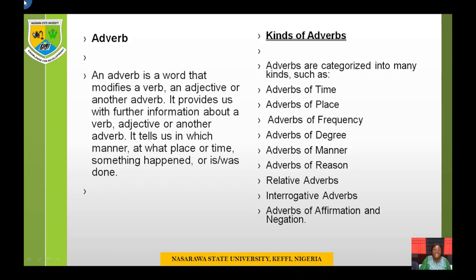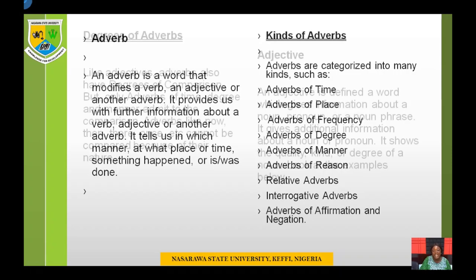An adverb is a word that modifies a verb, an adjective, or another adverb. It provides further information about a verb, an adjective, or another adverb. It tells us in which manner, at what place, or at what time something happened or is done. Adverbs are categorized into many kinds such as adverbs of time, adverbs of place, adverbs of frequency, adverbs of degree, adverbs of manner, adverbs of reason, relative adverbs, interrogative adverbs, and adverbs of affirmation and negation.